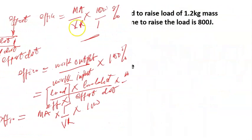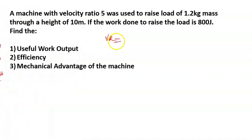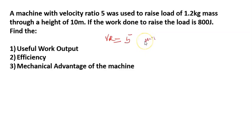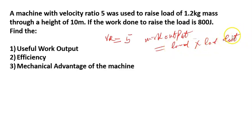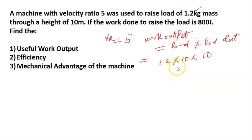The example says: a machine with velocity ratio of 5 — here we've been given that our VR equals 5 — is used to raise a load of 1.2 kg of mass through a height of 10 meters. Find the useful work output. Now, our work output, like we initially defined, will be given as load times load distance. That's the same thing as 1.2 times 10 times 10. Here it's 1.2 kg, we're converting it to newtons by multiplying it by acceleration due to gravity, 10, and finally multiplying it with the height, 10. So it gives me 120 joules.